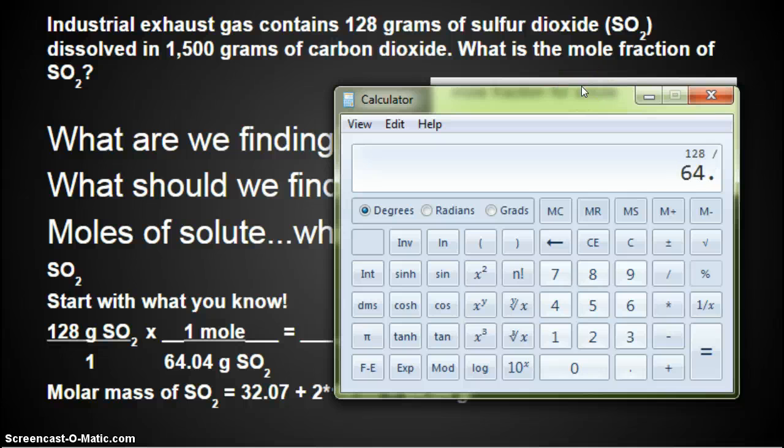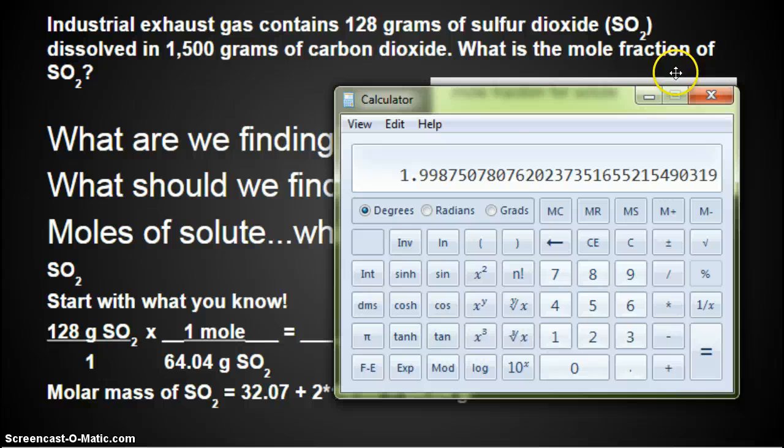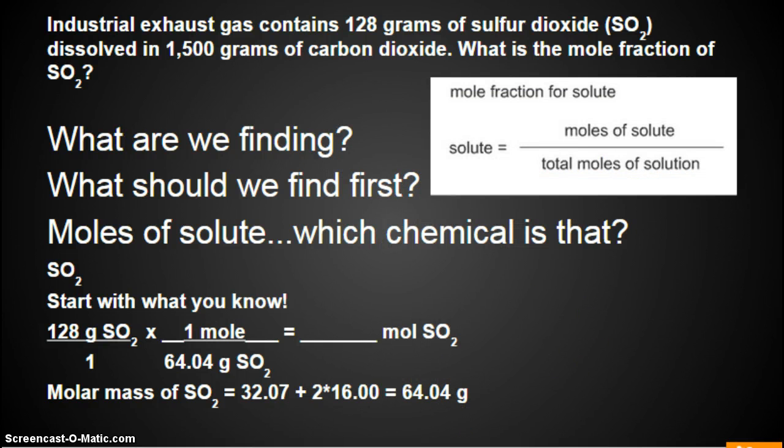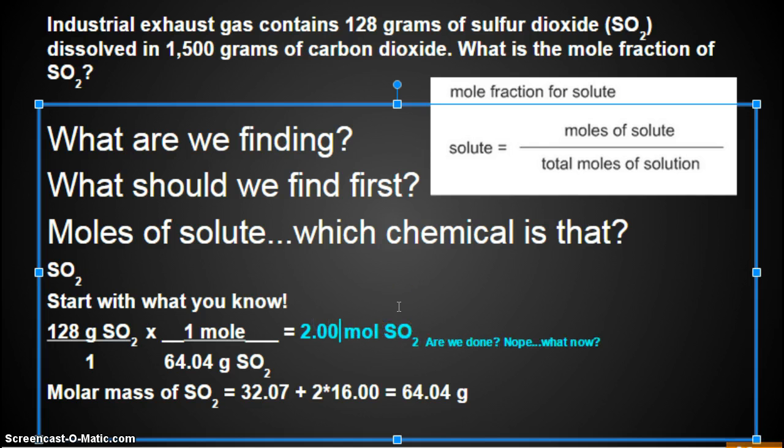And in your calculator, you would type in 128 divided by, because we divide by what's on the bottom, 64.04. And if we round to hundredths, the 8 makes the 9 round up. So if we have $1.99, and we have one more penny, what do we have? We have 2.0. And I said round to hundredths. 2.00 moles of SO2. Are we done?